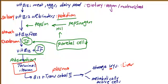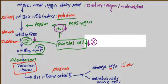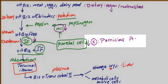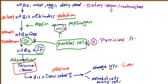Another cause is if you have decreased HCl in the stomach, or if you don't have intrinsic factor — that's a problem with the parietal cells. This is called pernicious anemia, one of the most important causes of B12 deficiency. With pernicious anemia, decreased HCl means pepsinogen won't convert to pepsin, R-binders won't separate from B12, and without intrinsic factor, vitamin B12 cannot be absorbed.